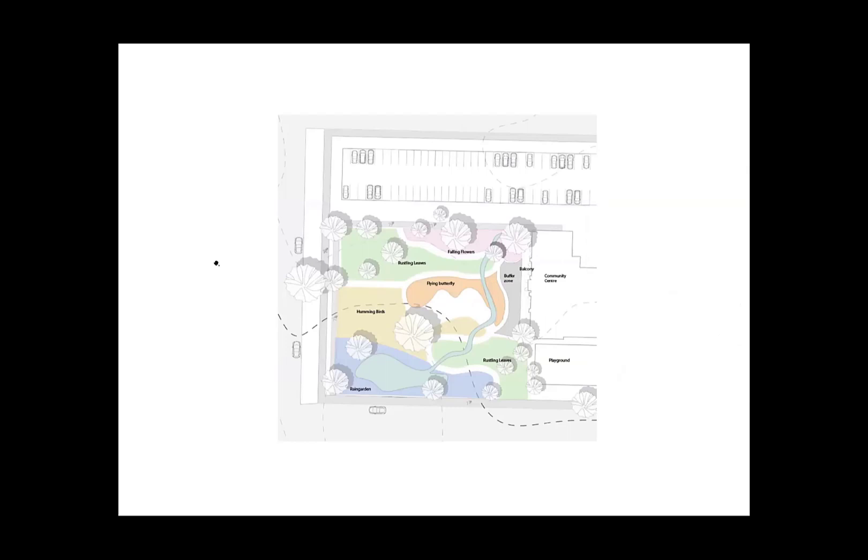Here is the color-coded zoning of my design. We have flying butterflies and hummingbirds in the center, surrounded by rustle leaf zones. We also have falling flowers and rain garden on the north and south, and a buffer zone to the community center.